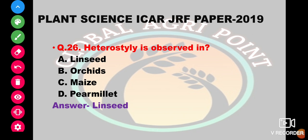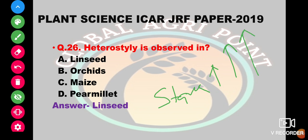Heterostyly is observed in which plant? Heterostyly means stamens are at different heights — either small, medium, or large. This condition is found in linseed, orchid, mesh, or polymer. The answer is linseed.